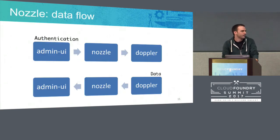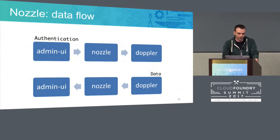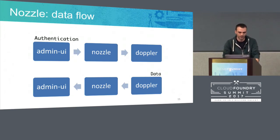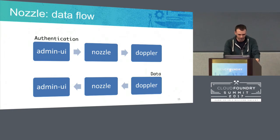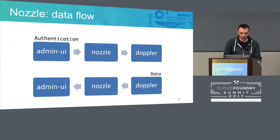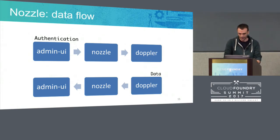As we are not Ruby experts, we started thinking about how to improve the performance without touching the code of the application. Can we put something in front of it and filter the data we don't need before it reaches the application? The idea is to put another Cloud Foundry application written in Go between the Admin UI and the Doppler endpoint. This way we would be able to drop all the metrics that are not needed before they reach the application and improve the performance.